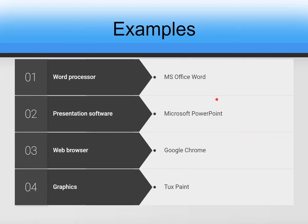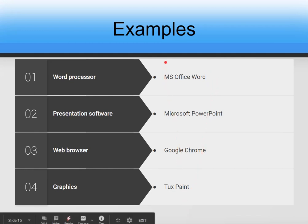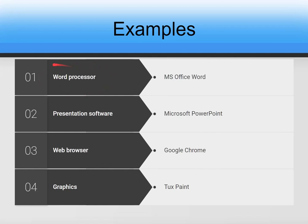There are various examples of application software. A word processor helps you type and create professional-looking documents — one common example is MS Office. Similarly, if you wish to make a presentation to depict any idea in a presentable manner, we use presentation software — the most common example being Microsoft PowerPoint.